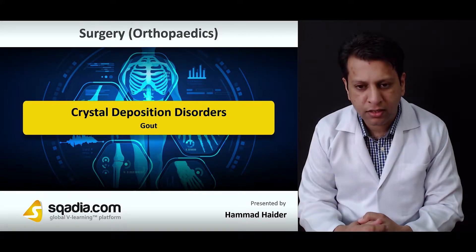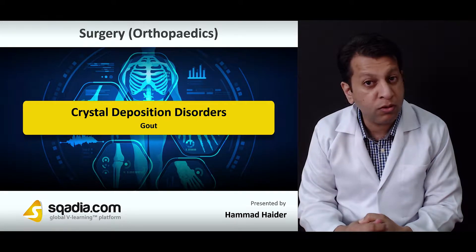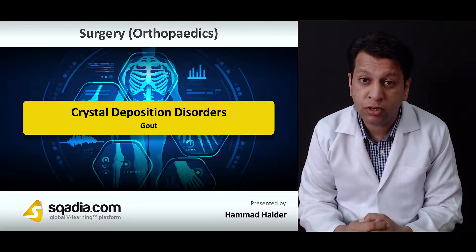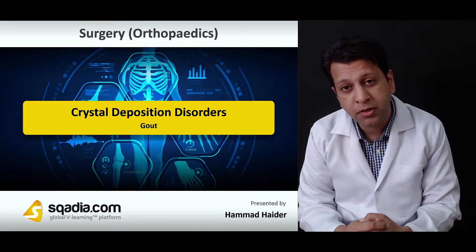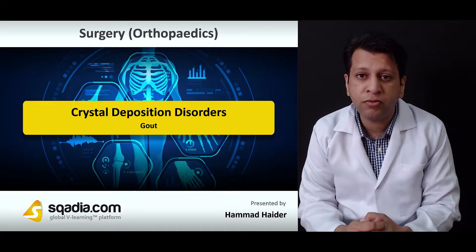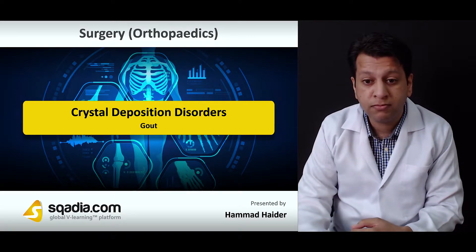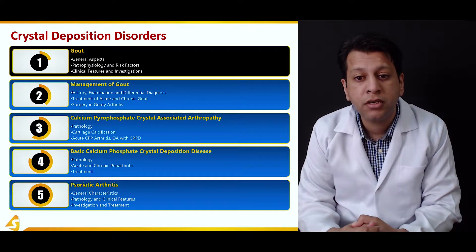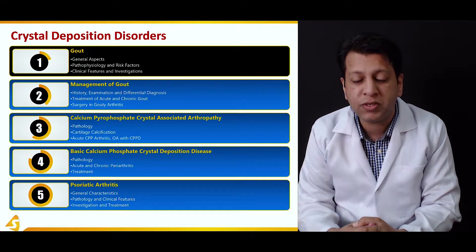Hello everyone, you're watching scadia.com. Have you ever seen a patient with swollen feet where his or her feet were orange? Or have you ever seen a patient with a swollen thumb only, and the patient is in extreme agony? If you see a patient with swollen metatarsal joint with an orangish peel over the skin, most probably that patient has got gout. In this topic we will cover the general aspects of gout, the pathophysiology, risk factors, clinical features, and investigations.